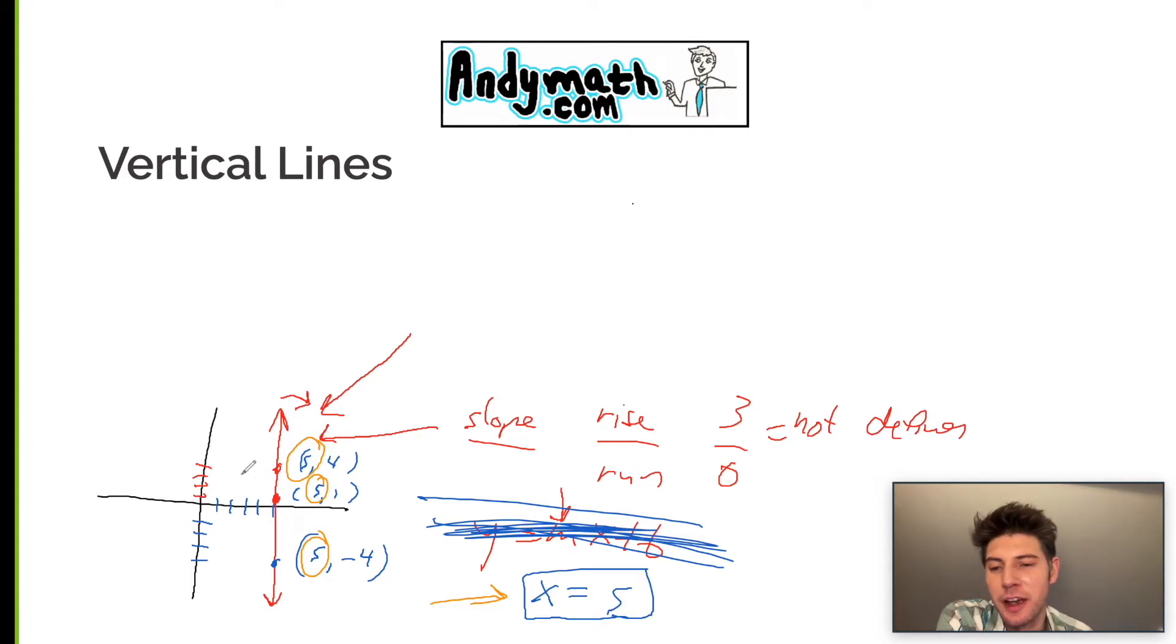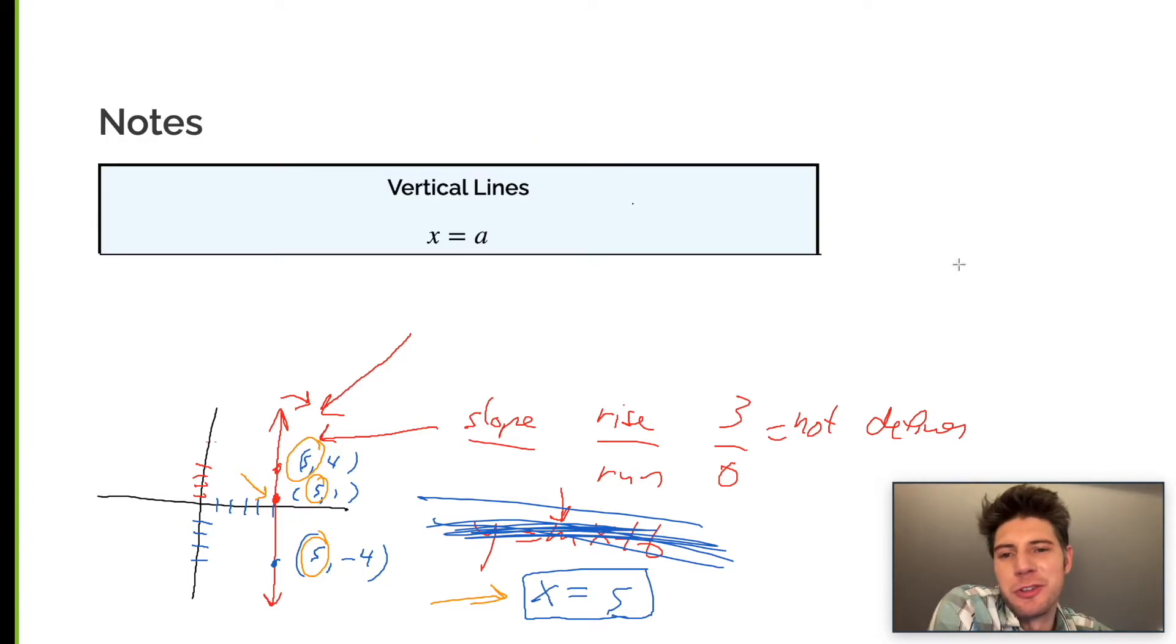So this would be the official notes for vertical lines: simply x equals a, where a is your x-intercept.